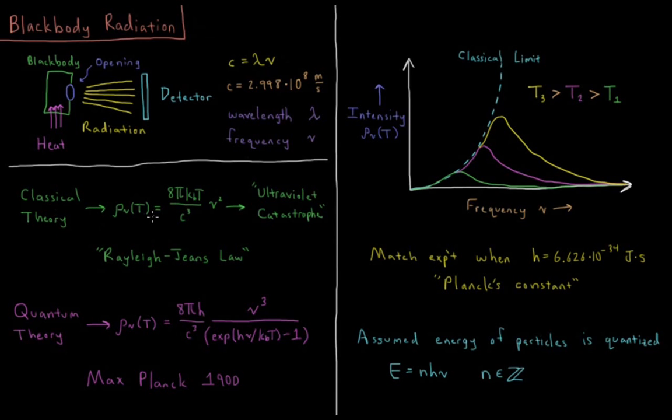This classical theory, called the Rayleigh-Jeans Law, predicted that as the frequency of the light goes up, the amount of it goes up with the square of the frequency. So the classical theory predicted this type of parabola here, where I've got this blue dotted line, the classical limit.